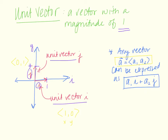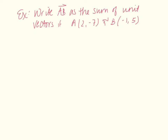That comes from scalar multiplication: a1 times unit vector i = (1, 0) plus a2 times unit vector j = (0, 1). Distributing gives the vector (a1, 0) plus the vector (0, a2). Adding up the first and second terms gives the vector (a1, a2) — the definition of vector a. So for any vector, take the x-coordinate and multiply by i, and take the y-coordinate and multiply by j.